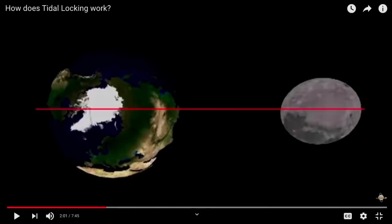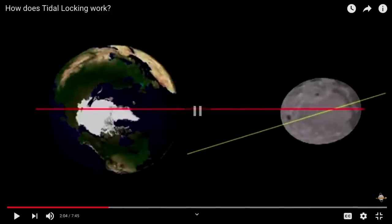Now the problem that you run into is as the moon continues to rotate on its own axis, this oval shape is pulled away from the line connecting it to the Earth. You see you have kind of an oval-shaped Earth and an oval-shaped moon. They're connected with this red line which is the line of gravitational attraction between the Earth and the moon. Now as the moon rotates, that line is pulled slightly off-center.